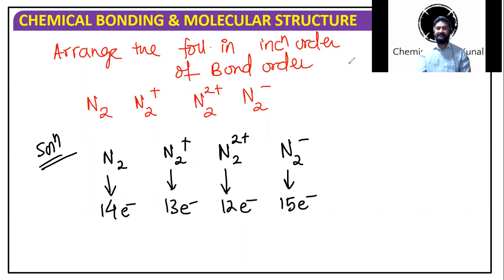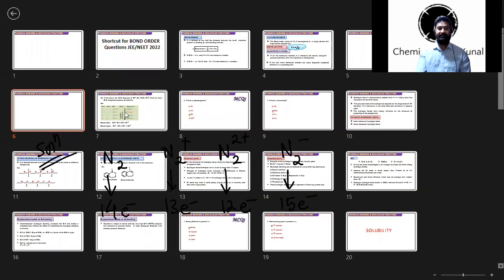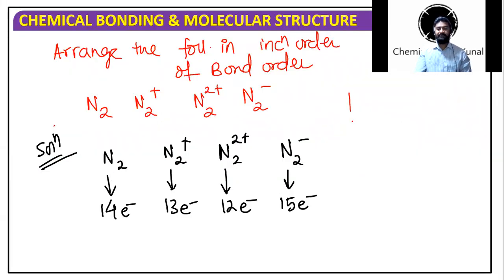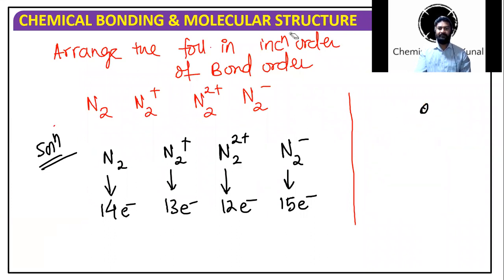Now we can go back and see the table. So if you see the table, based on this, we can easily take our call. Let's have a look at the table that I've given you. So as per the table, N2 was having 14 electrons, what was the bond order? Yes, the bond order was three.